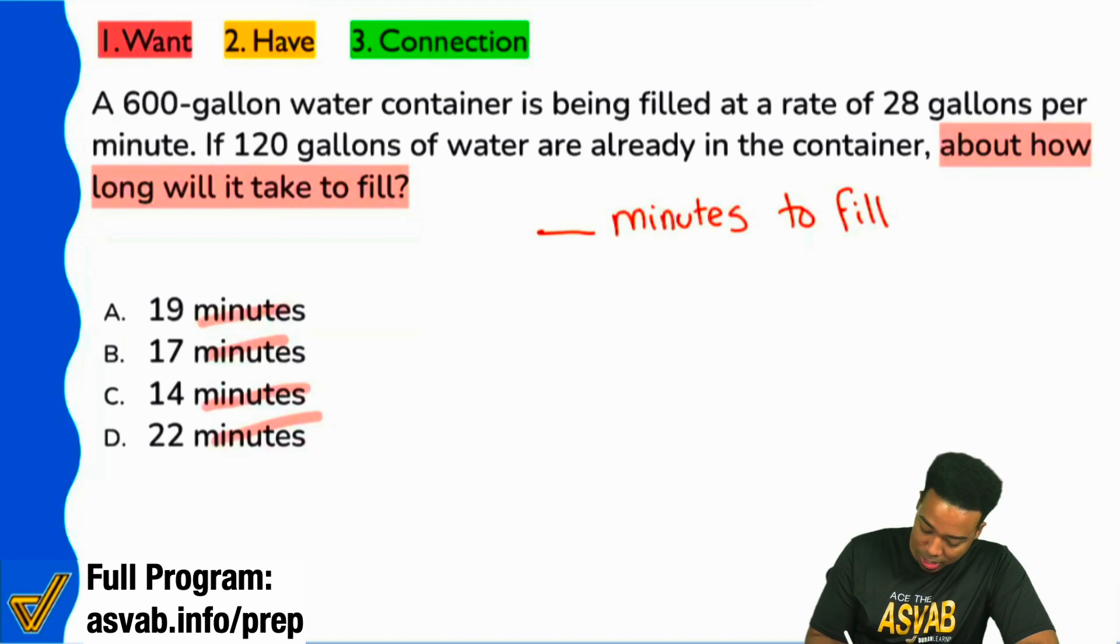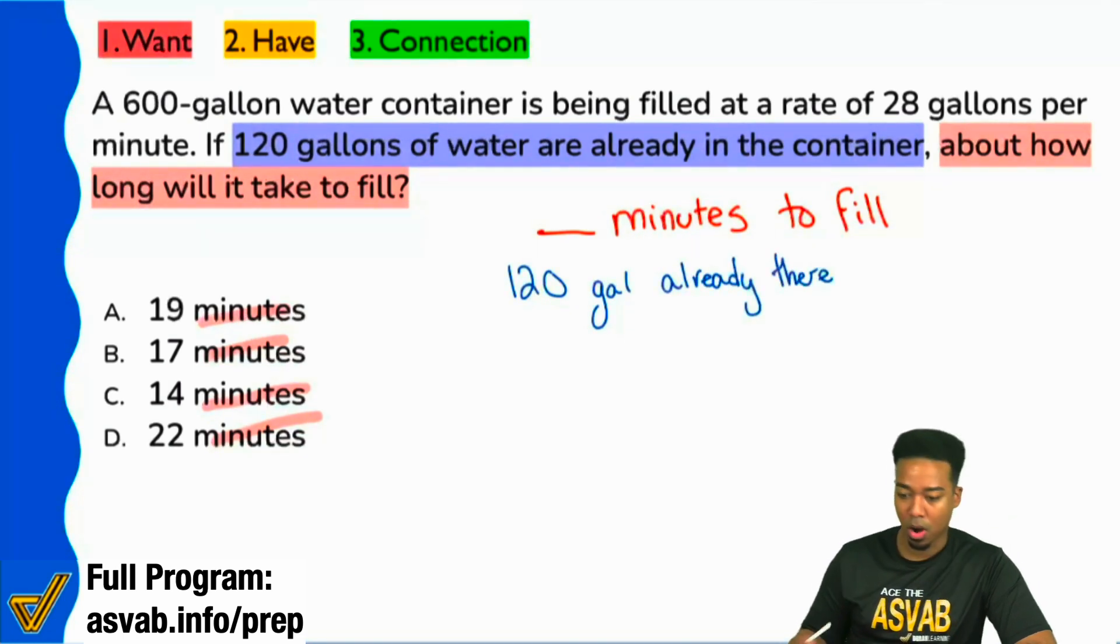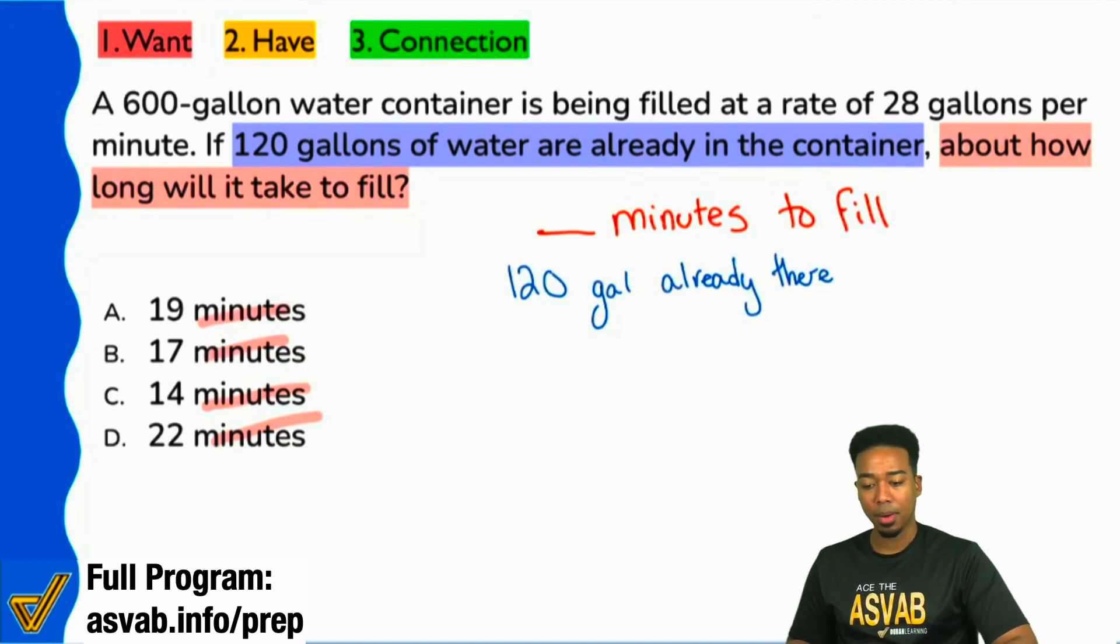You see the word 'if' - whatever follows it is going to be conditional information, information that is going to help you find that final answer. So here it says, if 120 gallons of water are already in a container. Okay, great. We can say 120 gallons already there.